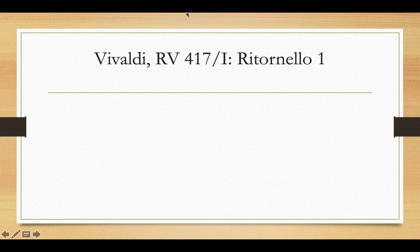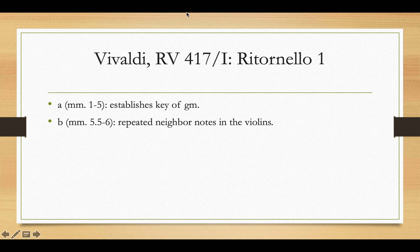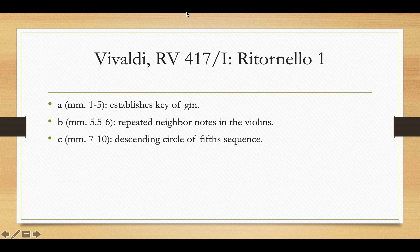Let's take a look at the first ritornello. This first ritornello has four main thematic ideas. Idea A establishes the key of G minor, vacillating back and forth between tonic and dominant chords. The second idea features repeated neighbor notes in the violins, trading back and forth between violin 1 and violin 2. Idea C features a descending circle of fifths sequence. And the fourth idea, idea D, features psi figures and eventually leads to a perfect authentic cadence. Let's listen to this opening ritornello.